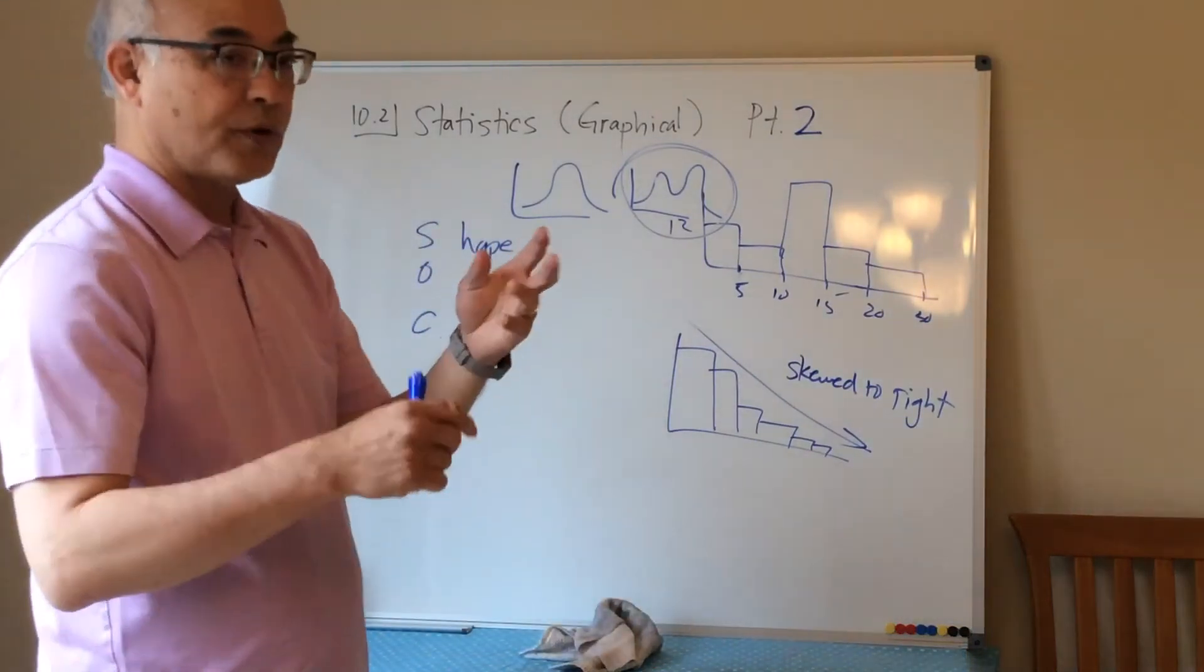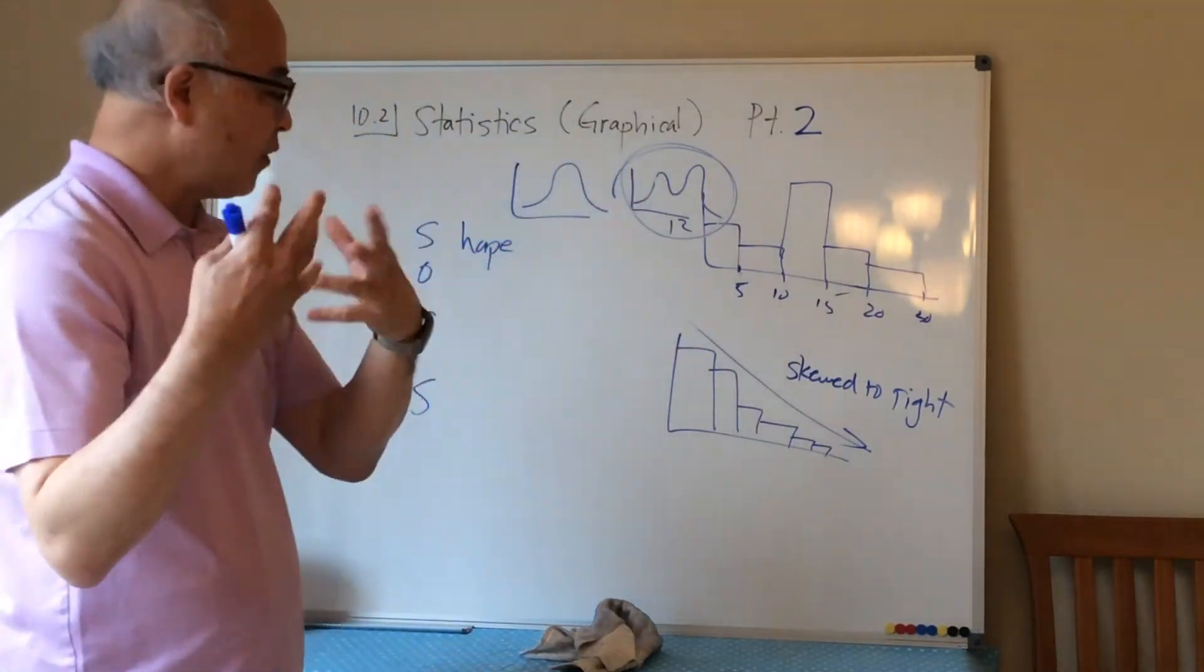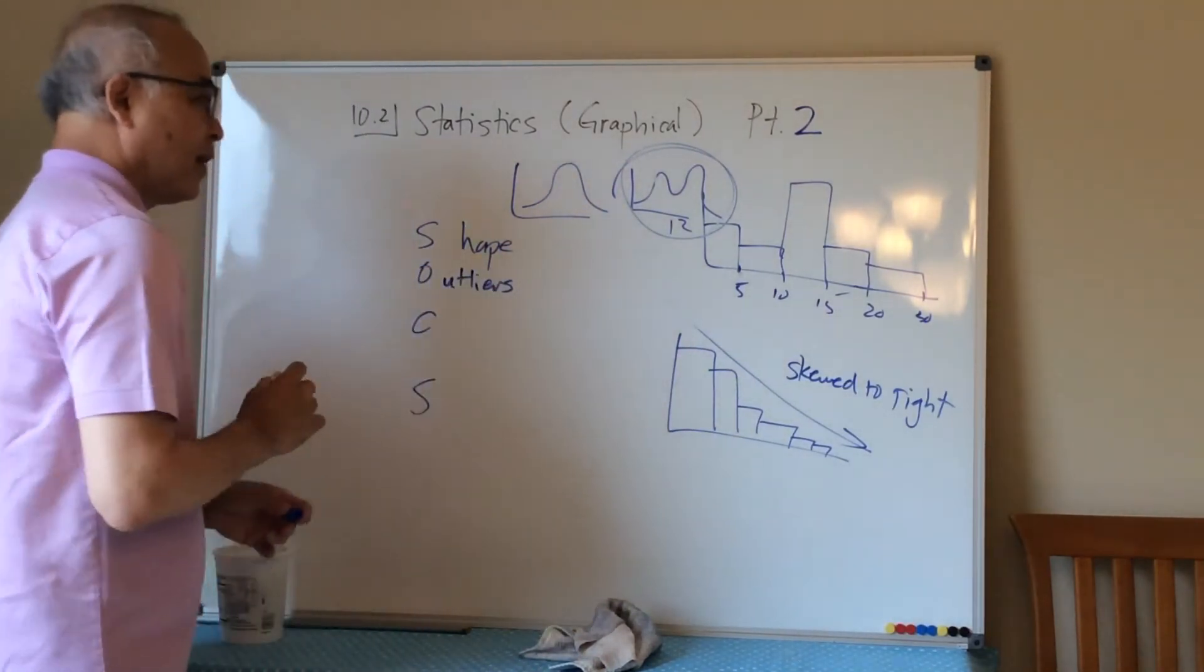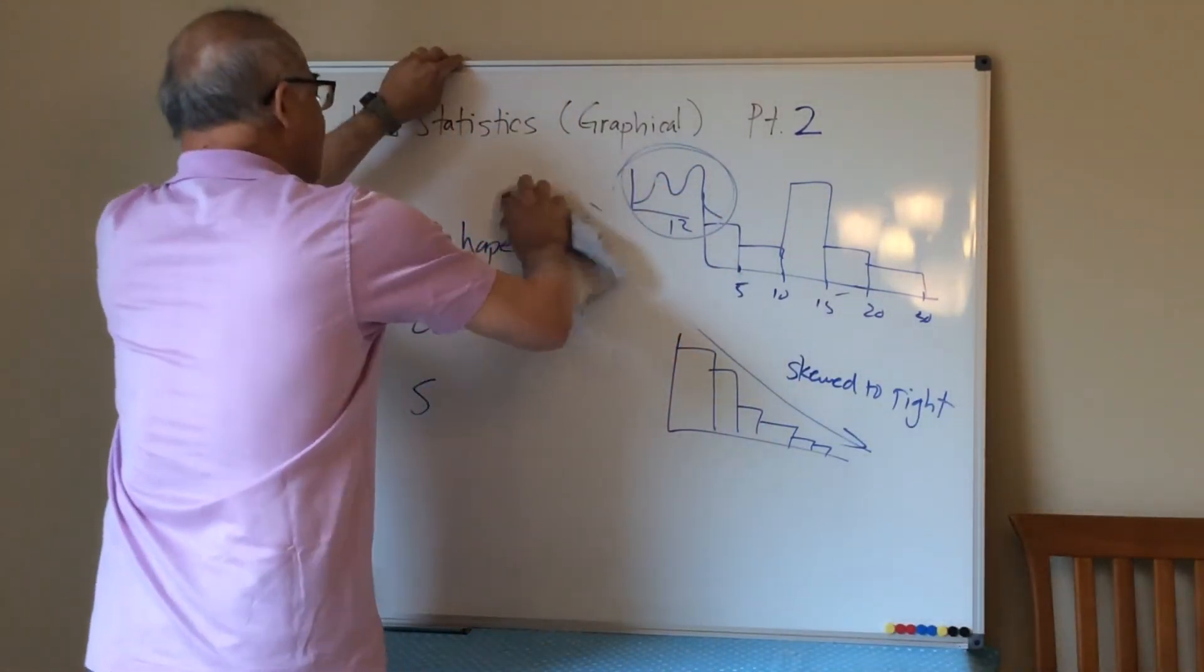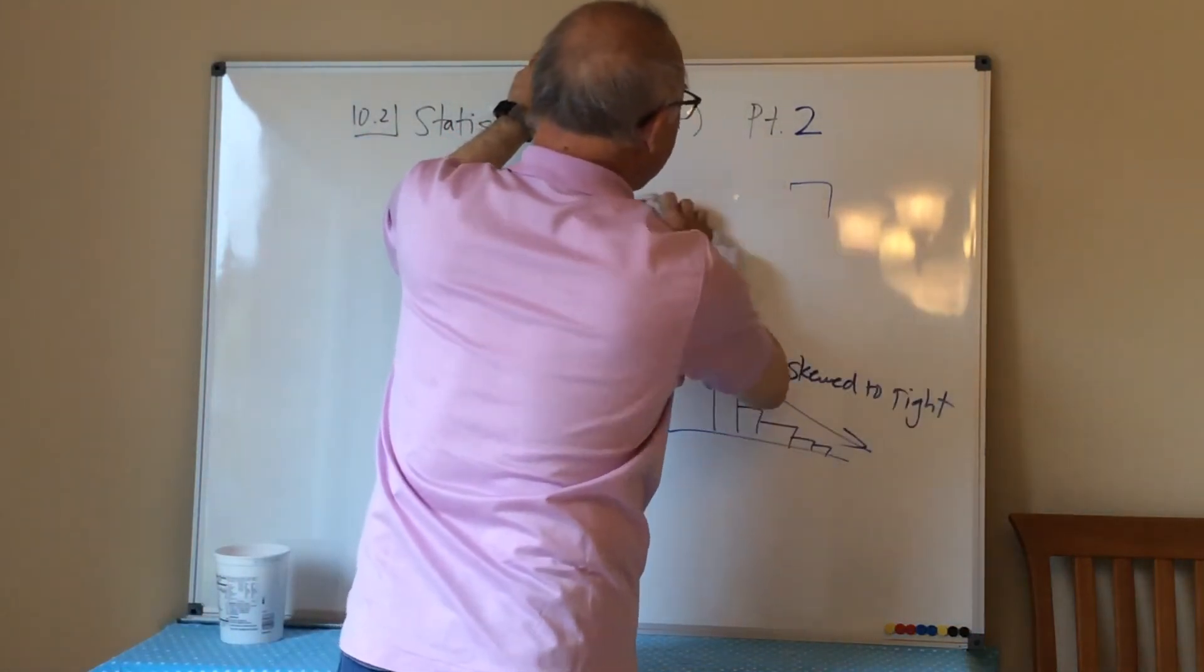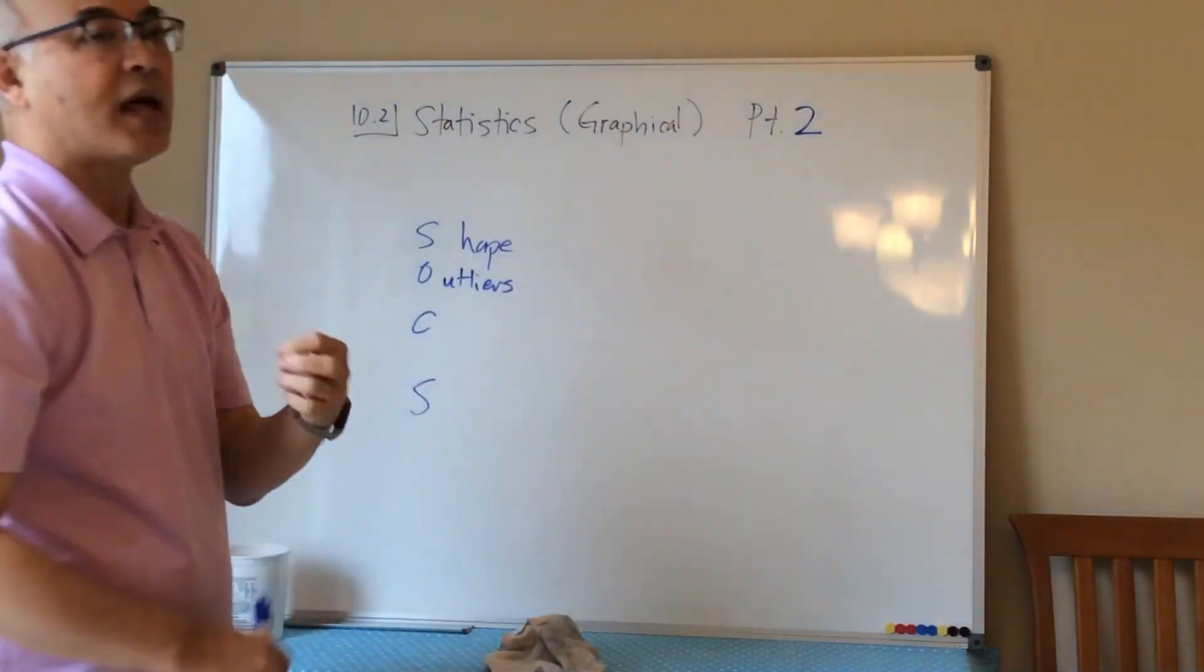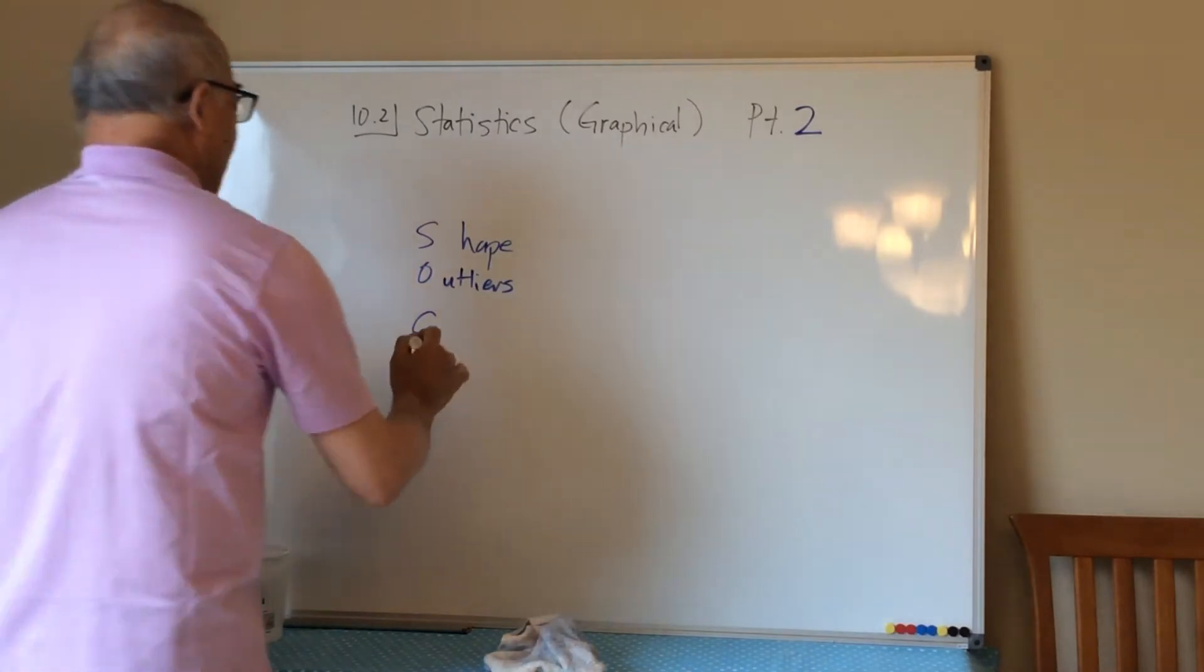This is what the shape is. There are two things you have to talk about: whether it's symmetric or not, skewed to the right or left, unimodal, bimodal, that type of stuff. O stands for outliers. Usually we will learn a way to actually calculate and define what an outlier is, but as of now we do not know that. So we're going to go ahead and say if there's something that might be an outlier, you can say that it is a possible outlier.